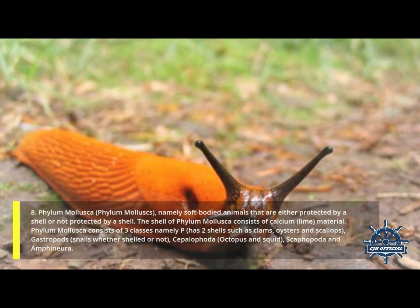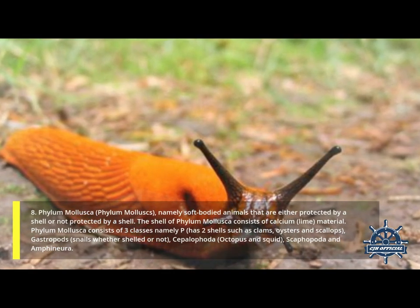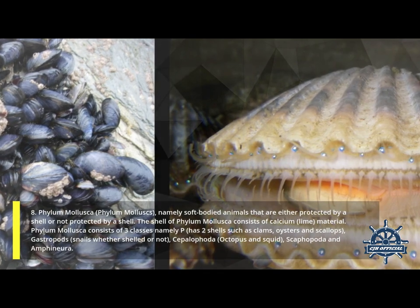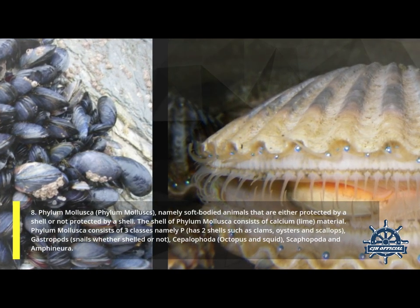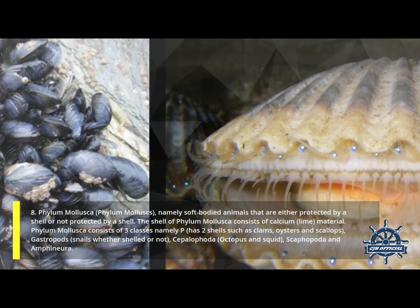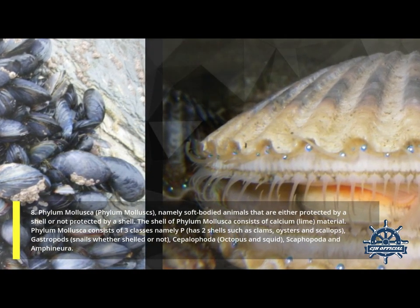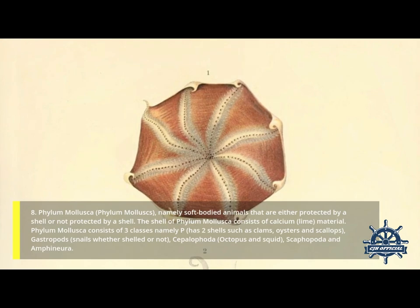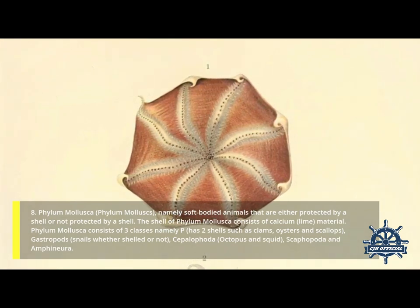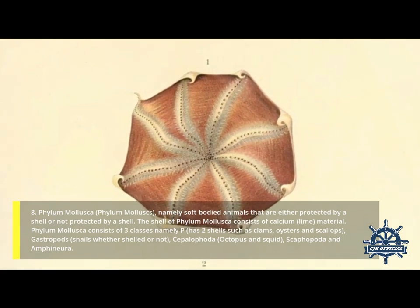Eighth, Phylum Mollusca — soft-bodied animals either protected by a shell or not. The shell of Mollusca consists of calcium (lime) material. Phylum Mollusca consists of three classes: Bivalvia (two shells, such as clams, oysters, and scallops), Gastropoda (snails, shelled or not), Cephalopoda (octopus and squid), Scaphopoda, and Amphineura.